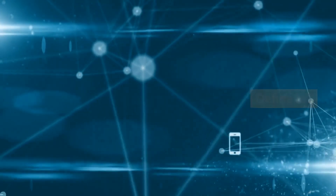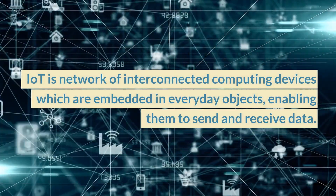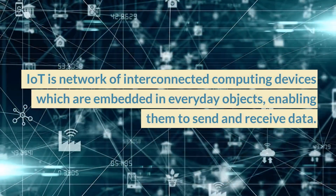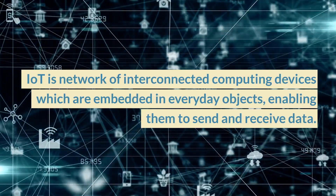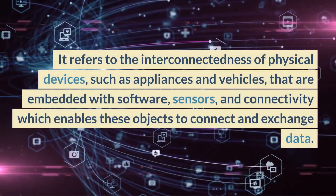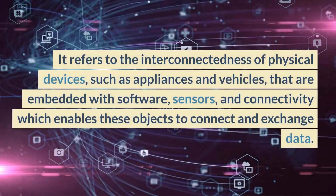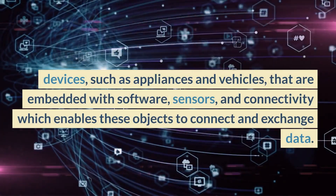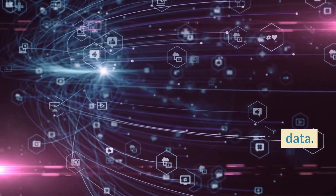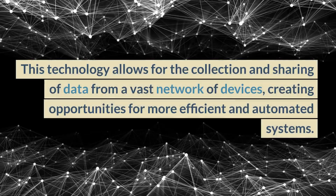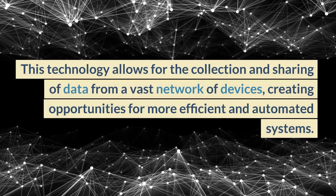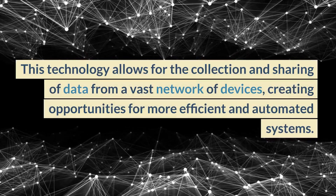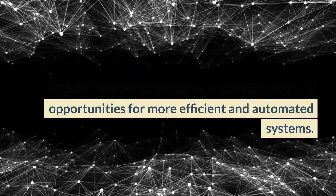Define IoT. IoT stands for Internet of Things. It is a network of interconnected computing devices which are embedded in everyday objects, enabling them to send and receive data. It refers to the interconnectedness of physical devices, such as appliances and vehicles, that are embedded with software, sensors, and connectivity, which enables these objects to connect and exchange data. This technology allows for the collection and sharing of data from a vast network of devices, creating opportunities for more efficient and automated systems.